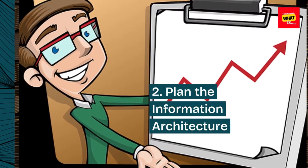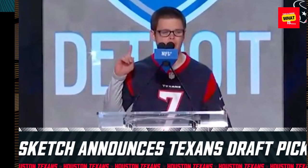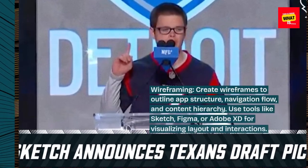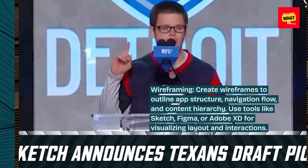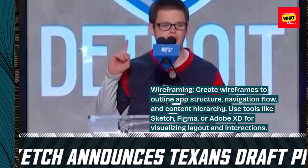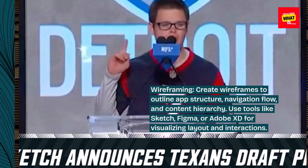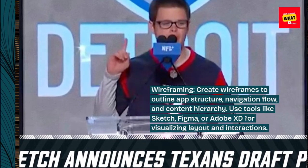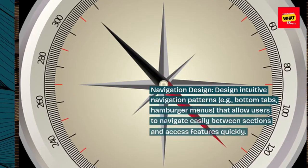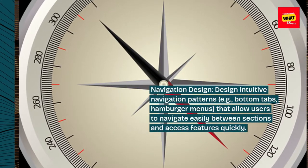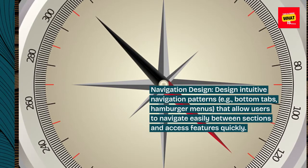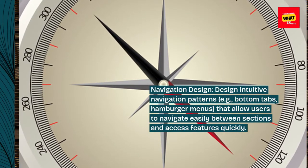Step 2: Plan the information architecture. Create wireframes to outline app structure, navigation flow, and content hierarchy. Use tools like Sketch, Figma, or Adobe XD for visualizing layout and interactions. Design intuitive navigation patterns, e.g. bottom tabs or hamburger menus, that allow users to navigate easily between sections and access features quickly.